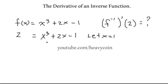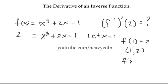So x equal to 1 works. We can write this as an ordered pair: F of 1 equals 2, so the pair is (1, 2). On the inverse, plugging 2 in, we should get 1 out, written as the ordered pair (2, 1). That's what we want.